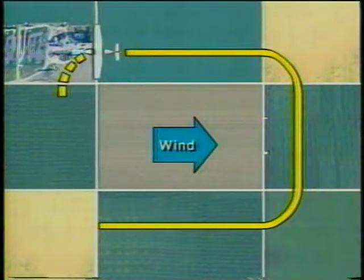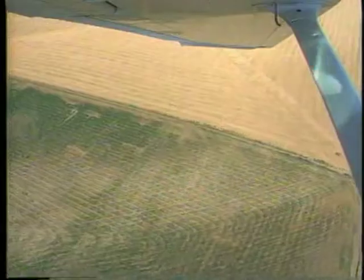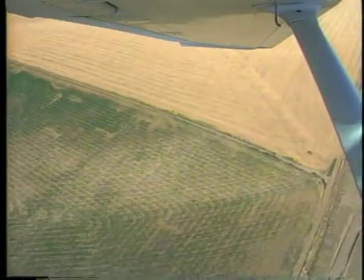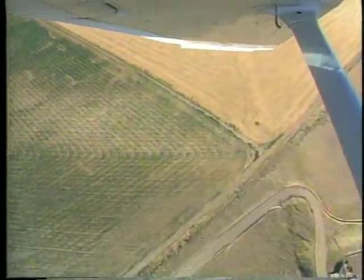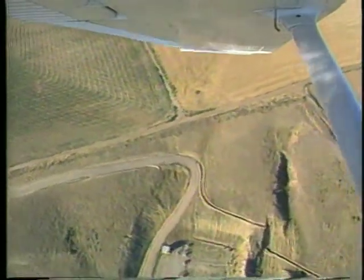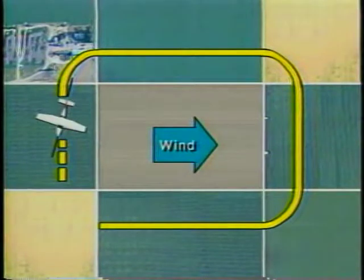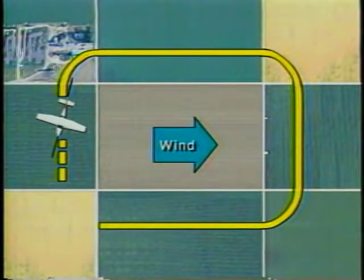During the turn to the next leg, your ground speed gradually increases, which means the angle of bank must increase to maintain a constant distance from the field. On this crosswind segment, the wind tends to drift the airplane toward the field, therefore the turn is completed so that a crab angle is established into the wind.